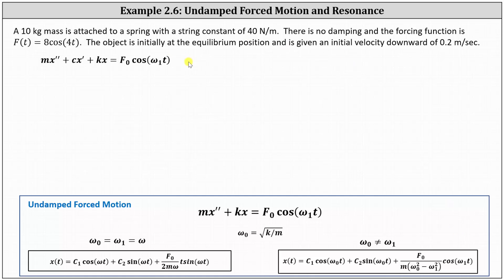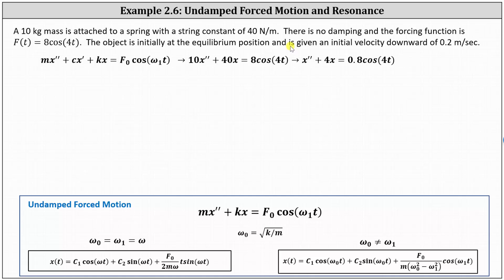Going back to our problem: since the mass m is 10 and the spring constant k is 40, and the forcing function is F(t) = 8cos(4t), the differential equation is 10x'' + 40x = 8cos(4t). We could divide both sides by 10 and write it as x'' + 4x = 0.8cos(4t), but there's no need since we'll be using the formulas. The object is initially at the equilibrium position, so x(0) = 0, and the initial velocity downward is 0.2 m/s, so x'(0) = 0.2.